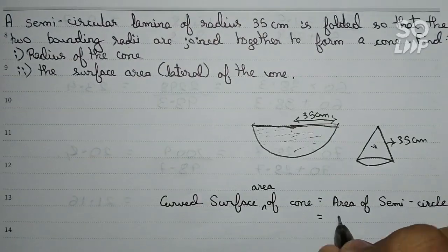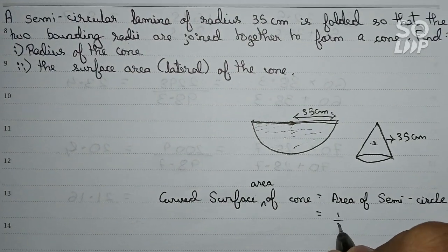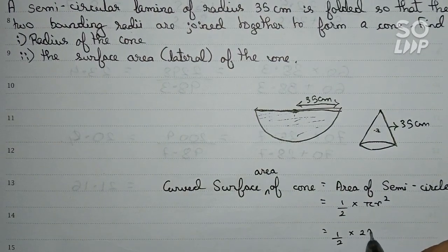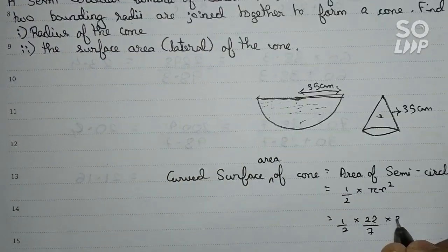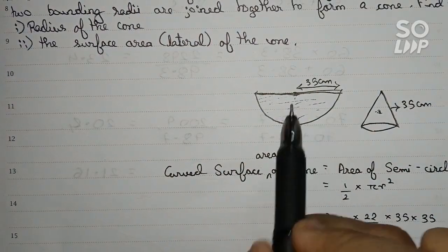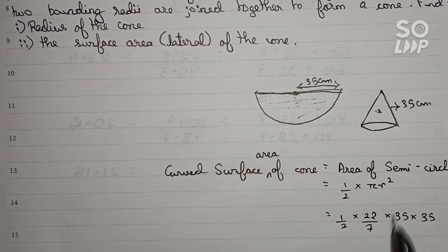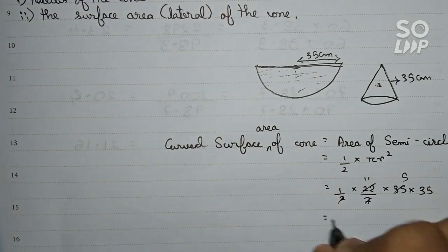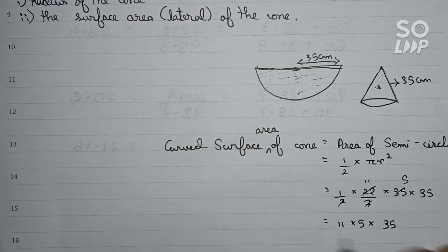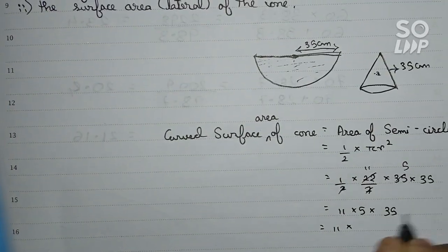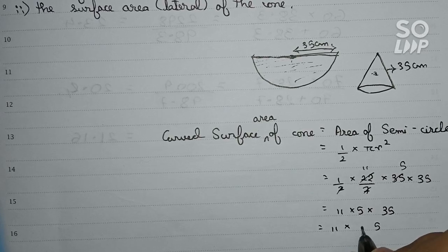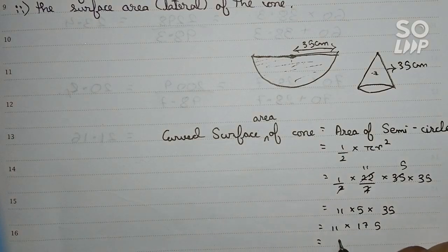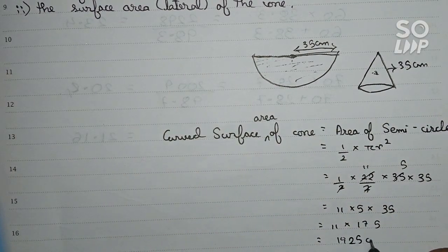The area of a semicircle is (1/2)πr². So that is (1/2) × (22/7) × 35 × 35. We simplify: 7 cuts with 35 giving 5, and 2 cuts with 22 giving 11. So it becomes 11 × 5 × 35, which gives us the area of the semicircle as 1925 cm².